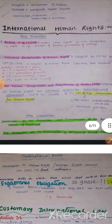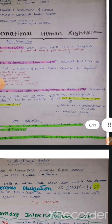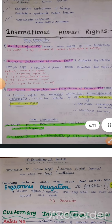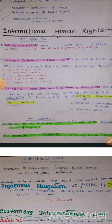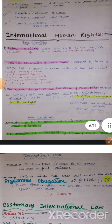Then there is UDHR — Universal Declaration of Human Rights — adopted by the United Nations General Assembly on 10th December 1948. It's a charter of human rights. It's not binding on nation states, but it's often referred to whenever questions on human rights arise. There are some articles here — if you can remember them, that's very good.